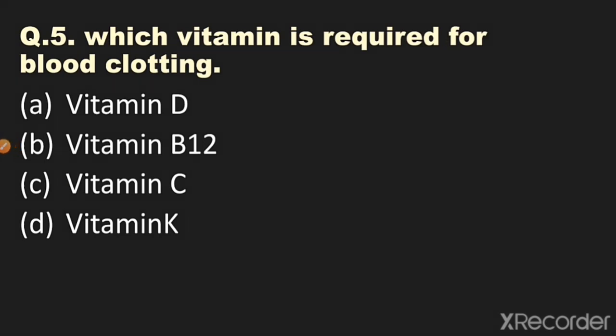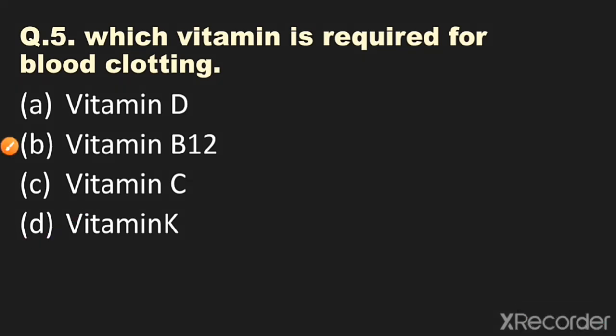Question number five: Which vitamin is required for blood clotting? Options: A) Vitamin D, B) Vitamin B12, C) Vitamin C, D) Vitamin K. The answer is Vitamin K — Vitamin K is required for the clotting of blood.